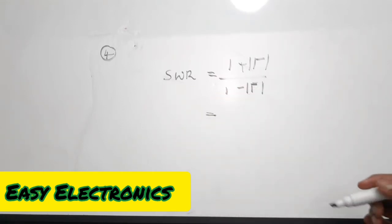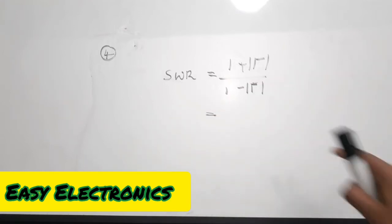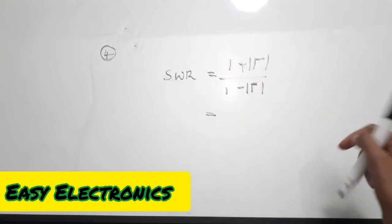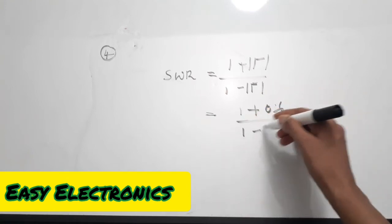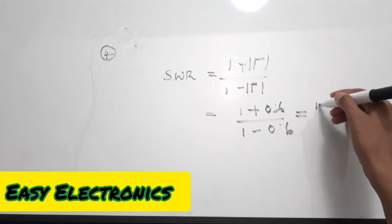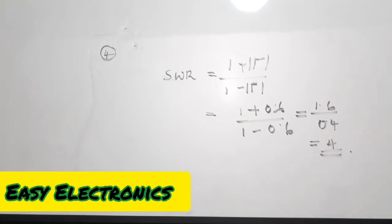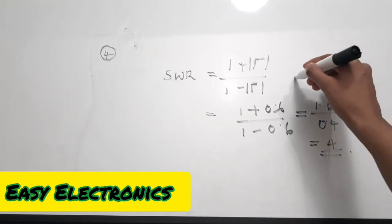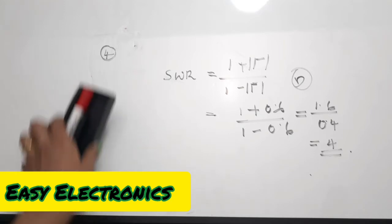In some questions the intrinsic impedance or other impedance values are given and you first find the reflection coefficient then calculate SWR. But here the reflection coefficient is directly given, so just substitute into the equation: 1 plus 0.6 divided by 1 minus 0.6 equals 1.6 divided by 0.4, which equals 4. So 4 is the value for the standing wave ratio. The correct answer is option B. Moving on to the fifth question.